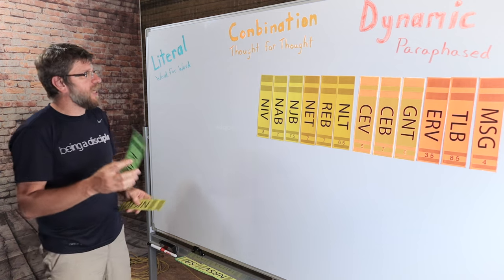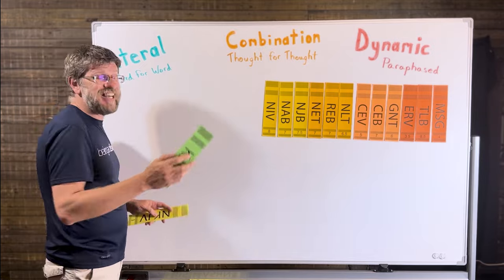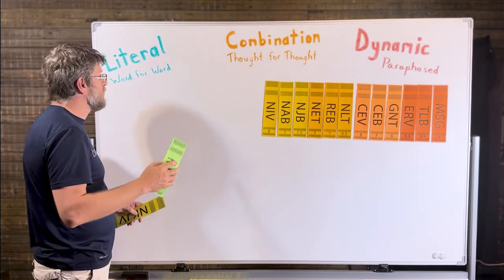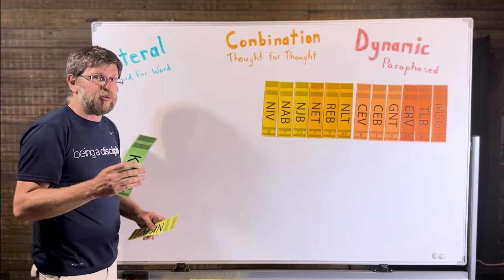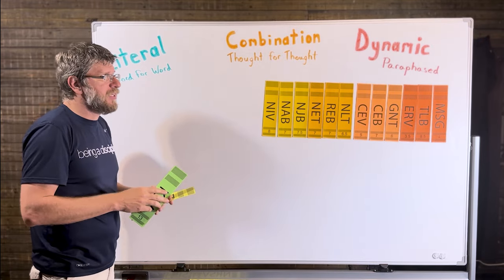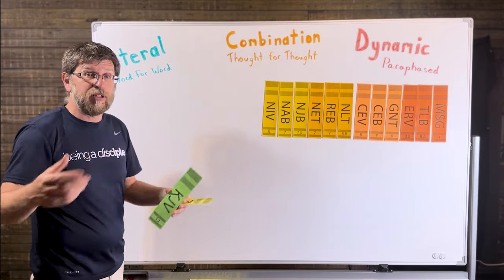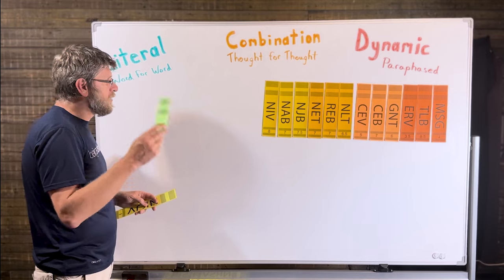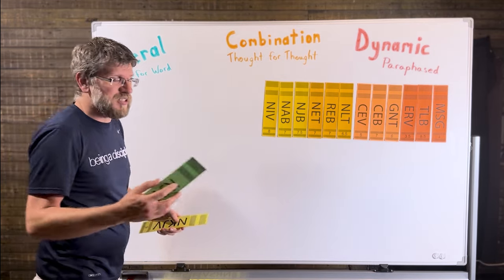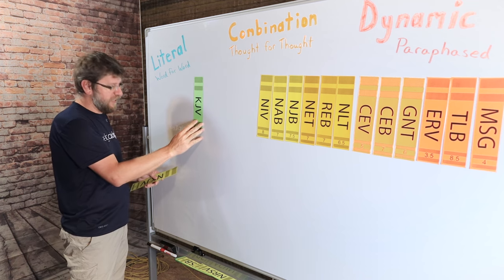The King James is kind of the gold standard of all translations. This one first began in 1604. That is an old translation. There was about 54 scholars that came together to try to translate the Bible and make it a little bit more accurate. And they created a beautiful translation that reads difficult today, but some of it is still the gold standard of how all translations are kind of measured.